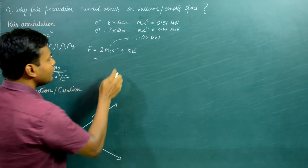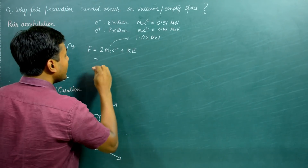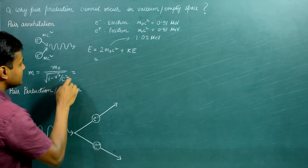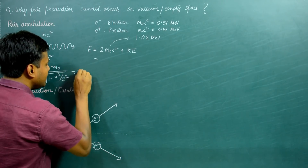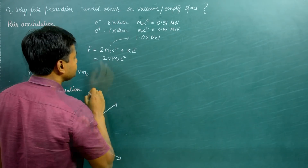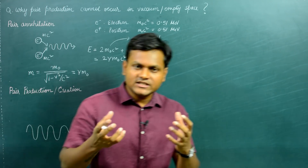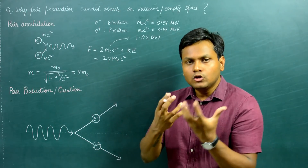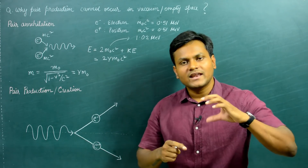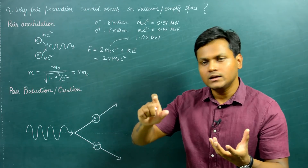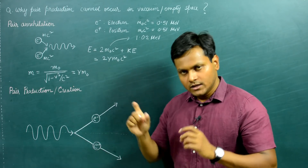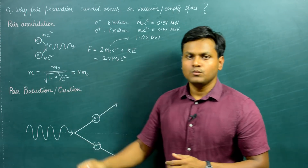The relativistic mass m is written as m = m₀ / √(1 - v²/c²), so the total energy including rest mass energy and kinetic energy is mc². Generally, we can write the total energy of the electron-positron pair as 2γm₀c², where γ = 1/√(1 - v²/c²) is the Lorentz gamma factor. The relativistic mass contains within it not only the rest mass but also the increase in mass due to kinetic energy.